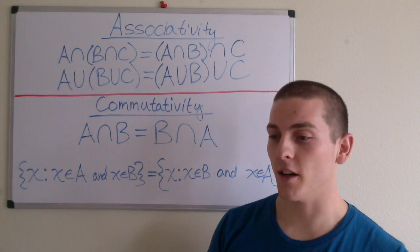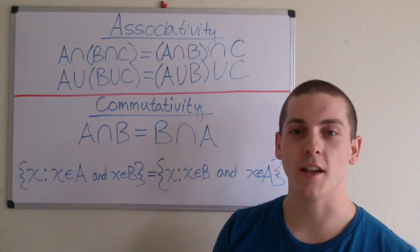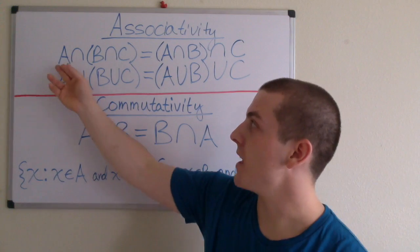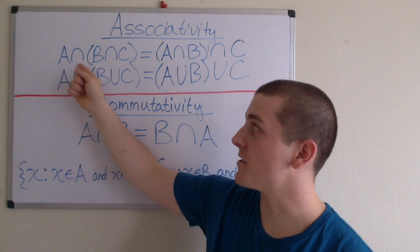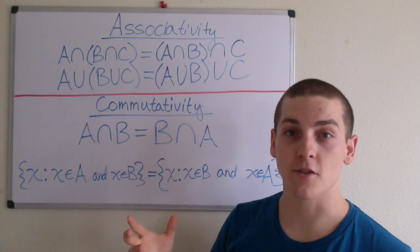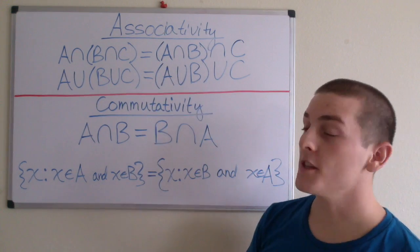Associativity is essentially just saying that we can regroup the sets that we are talking about. So A intersection B intersection C, that is A intersecting with the set B intersection C, is equal to the set A intersection B intersection C.